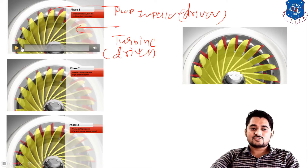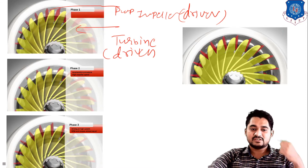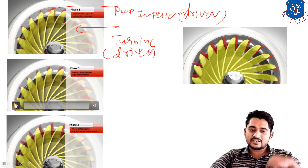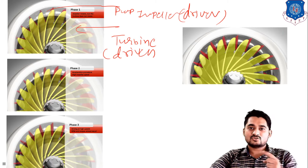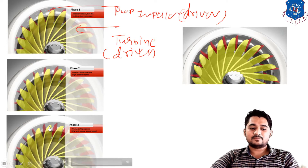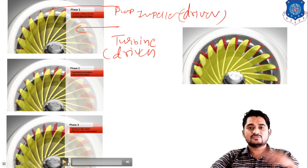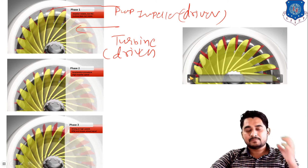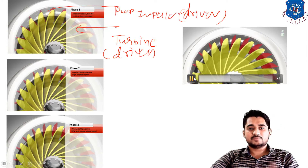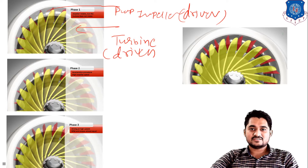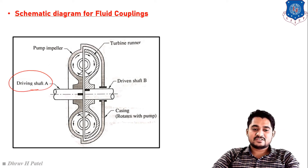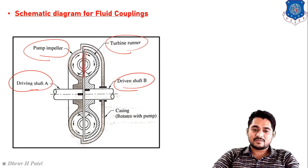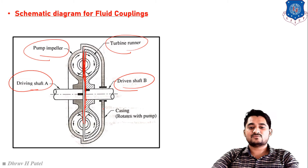To summarize the GIF: when only the pump impeller rotates initially, the turbine impeller follows. When the pump rotates at higher speed, the turbine also rotates at higher speed. When the pump reduces speed, the turbine also reduces speed — all without any mechanical connection. For the examination, you should draw a schematic showing the driving shaft with pump impeller mounted, the driven shaft with turbine rotor mounted, and the gap between them filled with fluid.